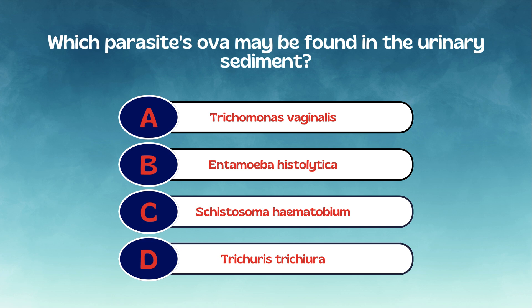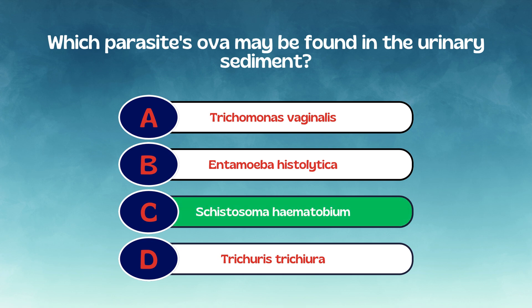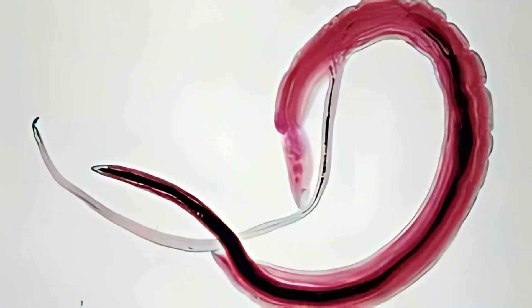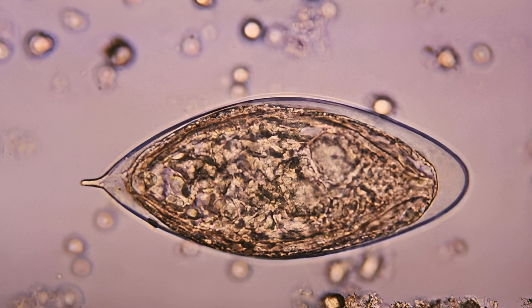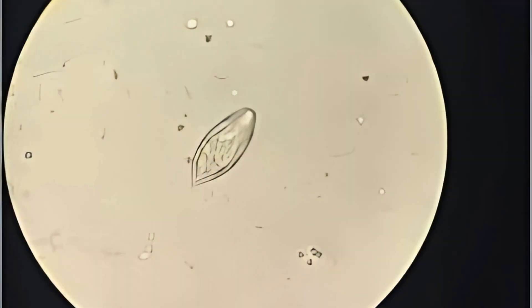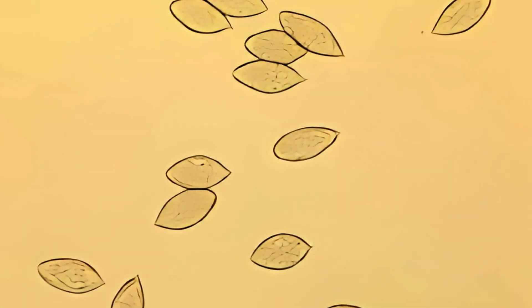The correct answer is Option C: Schistosoma hematobium. Schistosoma hematobium is a parasitic blood fluke, and it's the only one among the options known for laying eggs that are passed in urine. These eggs have a very distinctive terminal spine and are often found in the urinary sediment during routine microscopic examination, especially when urine is collected around midday, which is when egg shedding peaks.